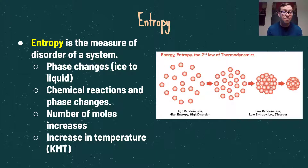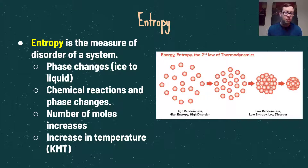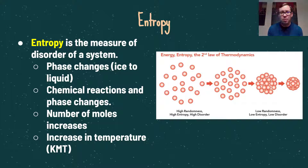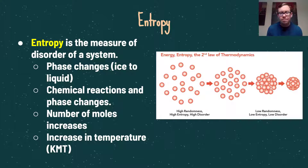If the number of moles of products is greater than the number of moles of reactants, there is more disorder, resulting in a positive delta S. An increase in temperature also increases entropy — by kinetic molecular theory, molecules at higher temperatures move faster, which represents increased disorder. We should be able to look at a chemical or physical process and easily determine whether entropy increases or decreases.